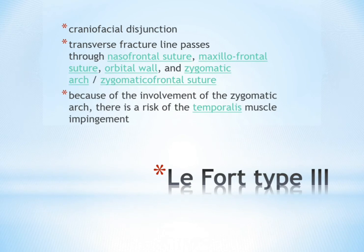Le Fort type 3 is craniofacial dysjunction. The transverse fracture line passes through the nasofrontal suture, maxillofrontal suture, orbital wall, and zygomatic arch or zygomaticofrontal suture. Because of the involvement of the zygomatic arch, there is a risk of temporalis muscle impingement.